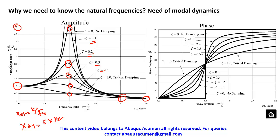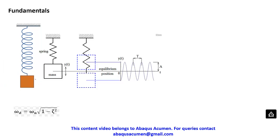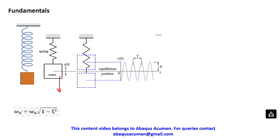When loading and natural frequency match, the phase angle also matches. When the loading-to-natural-frequency ratio tends to zero, the phase angle is different - it is not in line with your force. What we'll do is model a spring-mass system, pull the system, allow it to oscillate at its natural frequency, and then plot the time period of oscillation and amplitude.